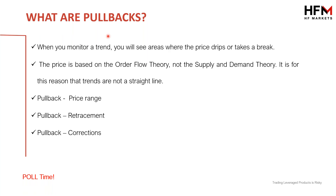What are pullbacks? Why is it difficult? And how can we start to take advantage of it? When you monitor a trend, if we look at the price action theory, there are only four types of movements that can happen within the market. People say to me a lot of the time: trading is so difficult because a thousand things can happen. That's actually incorrect — within the price action theory, only four types of price movements exist within the market.